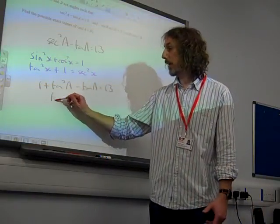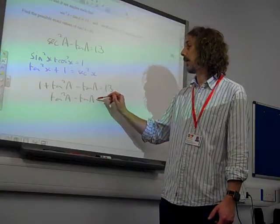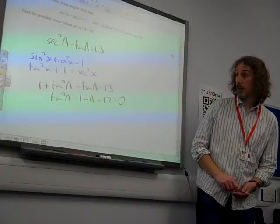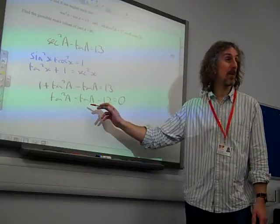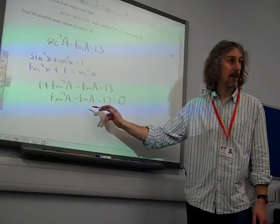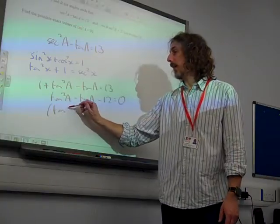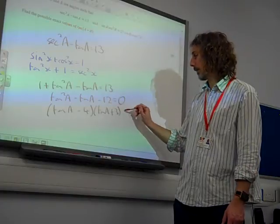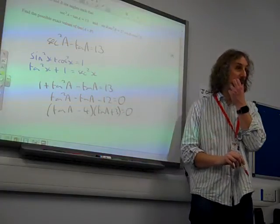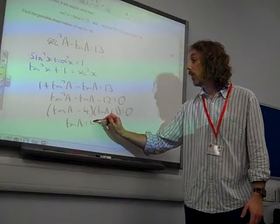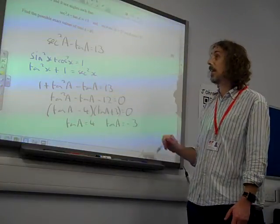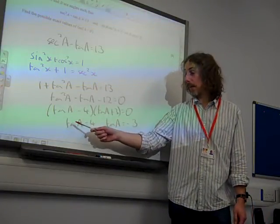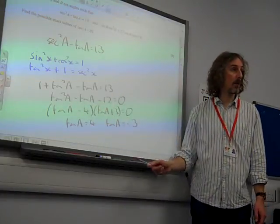Let's bring everything to one side. We've got tan²A minus tan A minus 12 is 0. Can I think of two things that multiply to give minus 12 and add to give minus 1? Golly, I can. That's going to be tan A minus 4 and tan A plus 3. Giving me two potential values of tan A. Tan A could be 4 or tan A could be minus 3. Notice I don't really care what A is. All I'm interested in is the value of tan A. And I've got it. I've got two values for it.